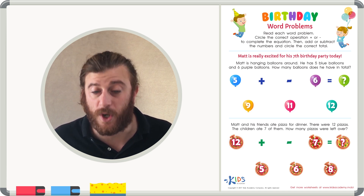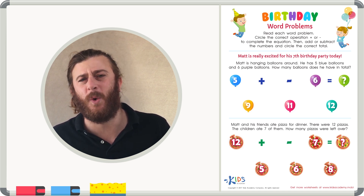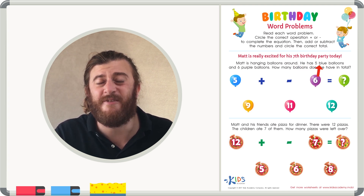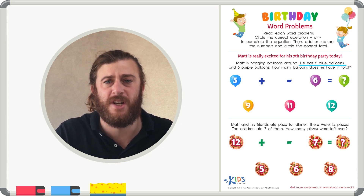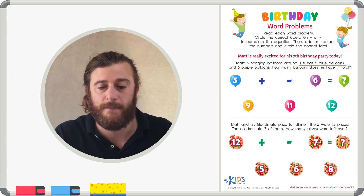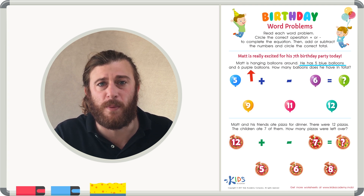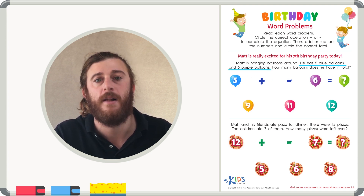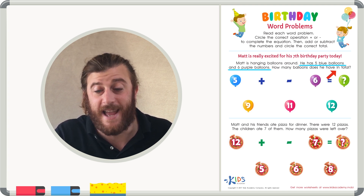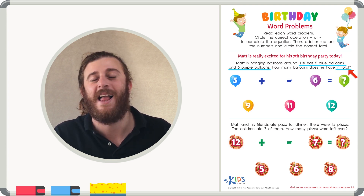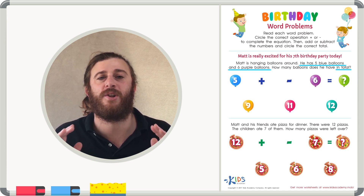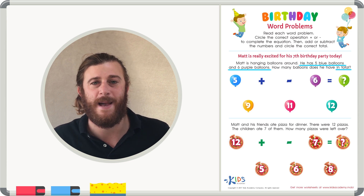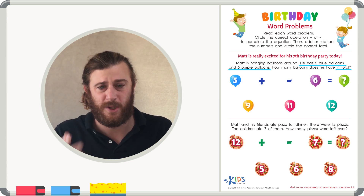Matt is hanging balloons around — that's cool, but not so important for our problem. He has five blue balloons — that's some important information, let's underline that. And six purple balloons — another piece of important information we should underline. How many balloons does he have in total? 'In total' — there's my clue word. We're going to have to figure out how many blue and purple balloons we have together.